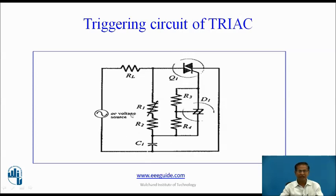The triac continuously conducts up to the end of the half-cycle. After the end of the half-cycle, triac and SBS both turn off.